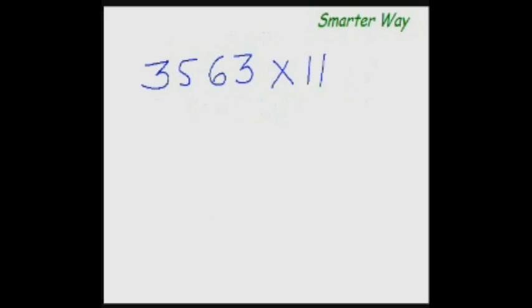So let's do it one more time. I know you are enjoying this. So what would be 3,563 times 11? Already I know you are at it. So copy the first digit as it is. Next digit would be 3 plus 5, that is 8. Now 5 plus 6 is 11. But 11 is a two digit number, then what do we do?